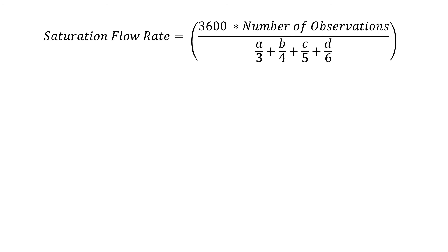Our equation for the saturation flow rate is 3600 times the number of observations. 3600 is the number of seconds per hour, because we want to turn these observations that were in seconds into an hourly value, and then multiply by the number of observations we had, in this case, 40.